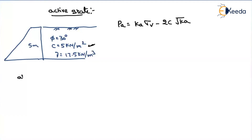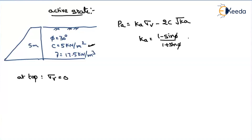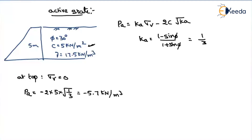At the top of the retaining wall, there is no soil above and no surcharge, so the vertical stress is zero. We also need Ka, which equals (1 minus sin phi) divided by (1 plus sin phi). Substituting phi equals 30 degrees, we get Ka equals 1/3. So the active earth pressure at the top equals minus 2 times C times root Ka, which gives minus 2 times 5 times root(1/3), approximately minus 5.7 kilonewton per meter square.